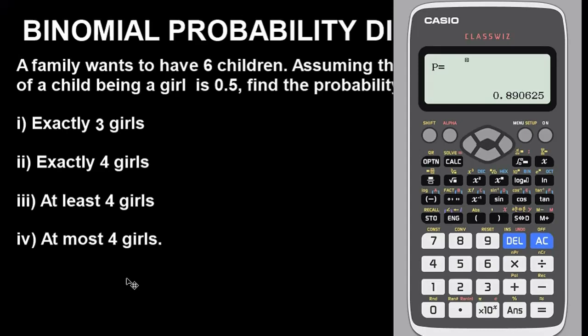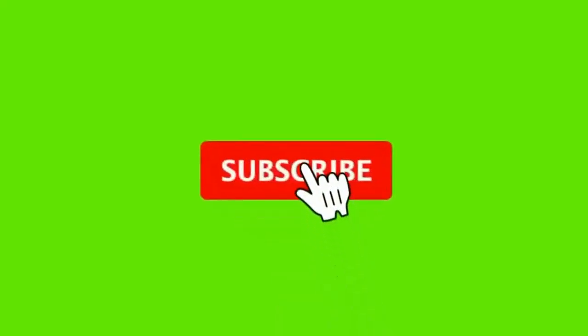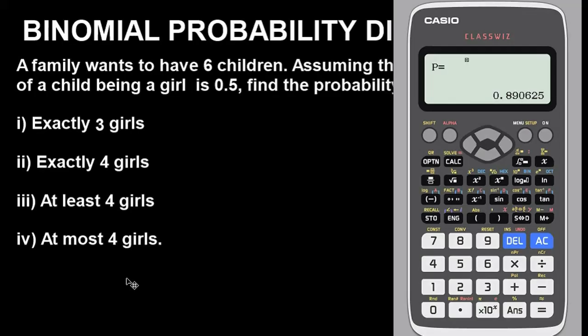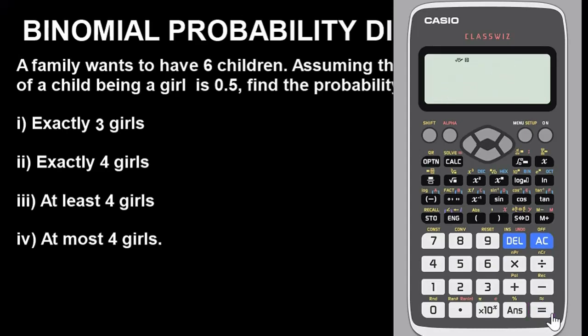Those are the tricks and techniques for solving binomial probability distribution using the Casio calculator. I hope you found this interesting. If you're new to our channel, please subscribe for more videos. Like, share, and comment to let me know how you feel about what you've learned. For any specific questions, leave them in the comment section below. Thanks for watching. Don't forget to clear the calculator when you're done by pressing Shift, CLR, and initializing.